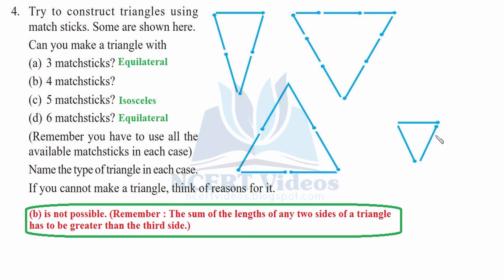With three matchsticks, yes we can make a triangle — it forms an equilateral triangle because all three sides are equal. With four matchsticks, we cannot make a triangle. If we try using three and one, we need a longer matchstick to connect the endpoints, which we don't have. With five matchsticks, yes — two matchsticks on one side, two on another, and one as the base forms an isosceles triangle.